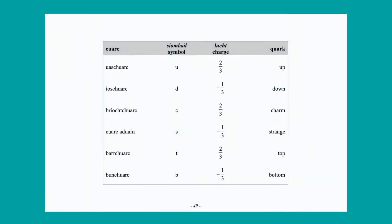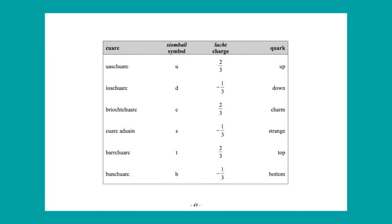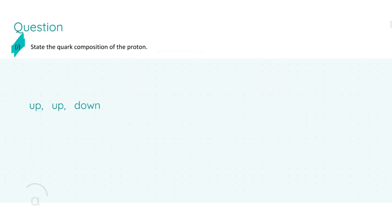Before I dive into part one, I want to refer your attention to page 49 of the formula tables book, which deals with the six different types of quarks — up, down, charm, strange, top, bottom — their charges and their symbols. In part one we're asked to state the quark composition of the proton, and the answer is up, up, down, which will get you seven marks if fully correct.